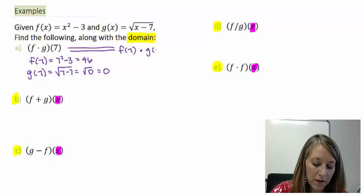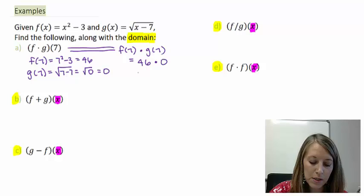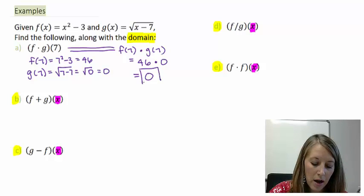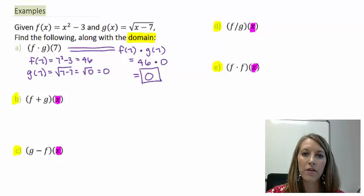So then f times g of 7 is the same thing as f of 7 times g of 7. So we just substitute in the numbers that we come up with. f of 7 is 46 times g of 7 gives me 0. 46 times 0 gives me 0.